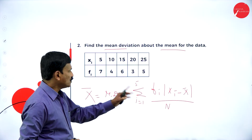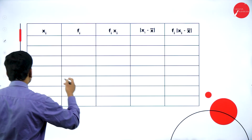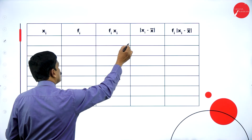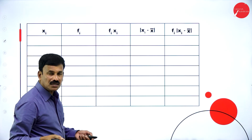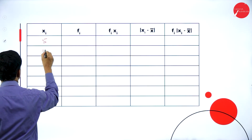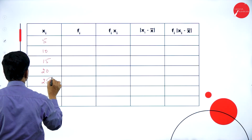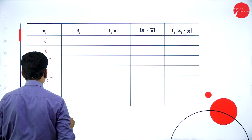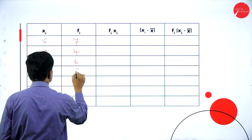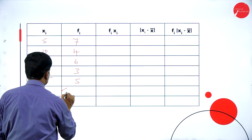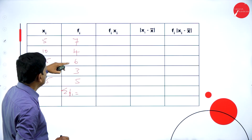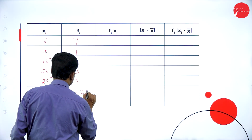The xi values are 5, 10, 15, 20, 25 and the fi values are 7, 4, 6, 3, 5. Adding sigma fi: 7 plus 4 plus 6 is 17, plus 3 is 20, plus 5 is 25. So sigma fi equals 25, which is n.